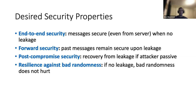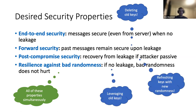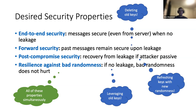And finally, we ask for resilience against bad randomness, meaning that if there is no leakage, then bad randomness should not hurt the protocol. The non-trivial part of Signal is that we want to achieve all these properties simultaneously. Intuitively, forward security is achieved by deleting old keys, post-compromised security is achieved by refreshing keys with new randomness, and resilience against bad randomness is achieved by leveraging the security of old secure keys.